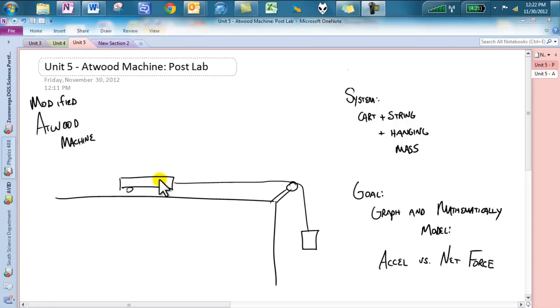Alright class, this is the post lab to the Unit 5 Atwood machine, actually it's a modified Atwood machine. Remember we got this frictionless car sitting right on over here, we have a pulley with a hanging mass there.